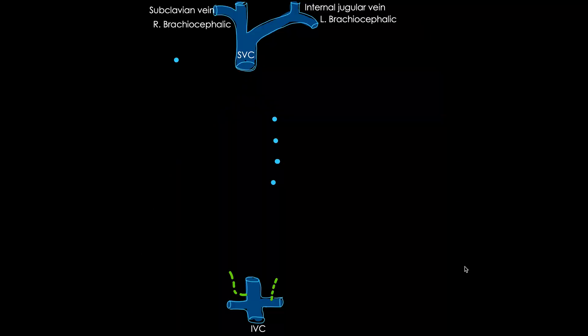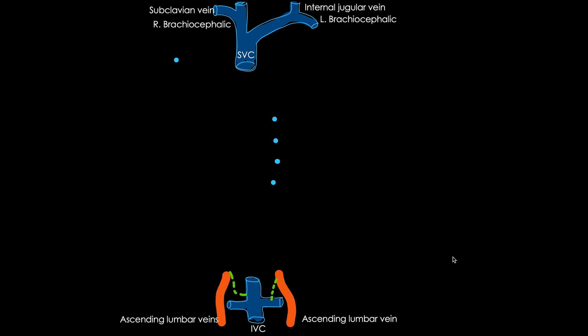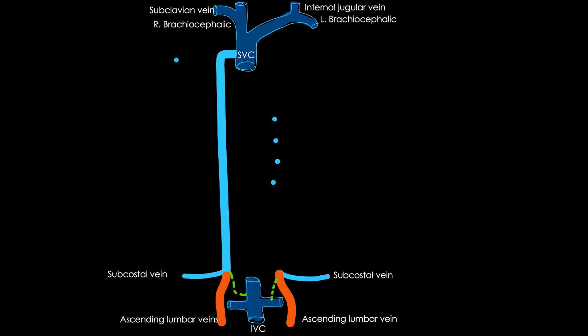The azygous vein is usually formed by the union of the ascending lumbar veins. We are looking at the ascending lumbar veins on both right and left sides. These ascending lumbar veins when joining with the subcostal veins on the right side form the azygous vein, which runs all the way in my posterior mediastinum and opens into my superior vena cava at the level of the fourth thoracic vertebra.